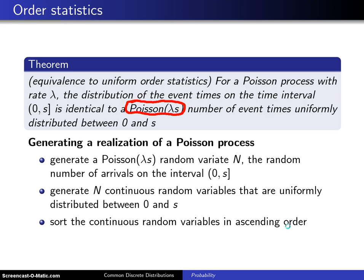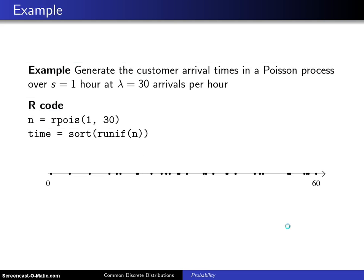On the next page, we're going to do an example, which is to generate the customer arrival times in a Poisson process over s equals 1 hour at lambda equals 30 arrivals per hour.